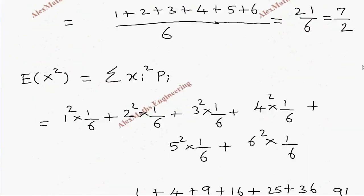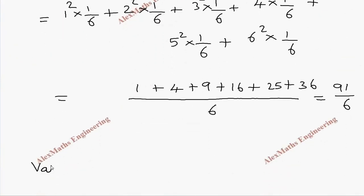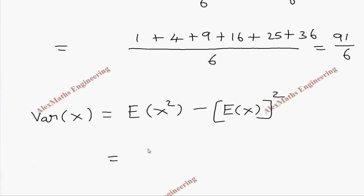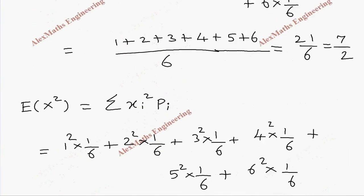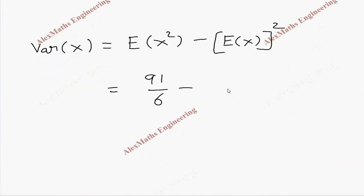In third part, we have to find the variance of X. We are going to write the formula, variance of X equal to E(X²) minus E(X) whole square. So, we already got the value of E(X²). This is 91 by 6 minus E(X) whole square. E(X) is 7 by 2. And square of this value. So, whole square. Now, this is 91 by 6 minus 49 by 4.